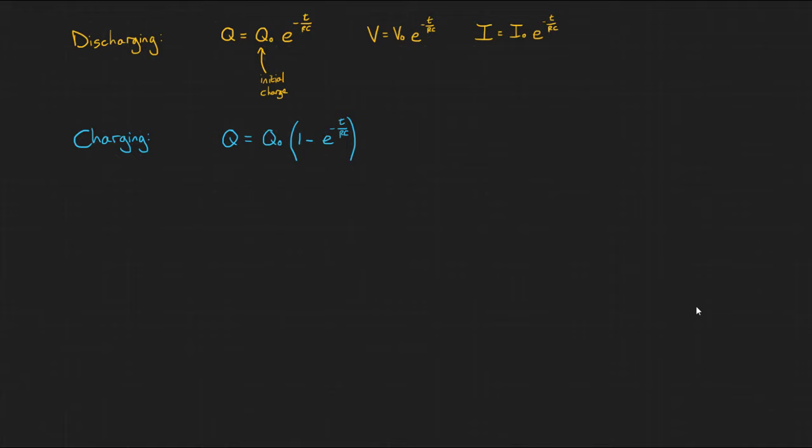Let's finish with an example. A 2200 microfarad capacitor is charged to a potential difference of 9 volts, then discharged through a 100 kiloohm resistor through this circuit. Calculate A, the initial charge Q0.